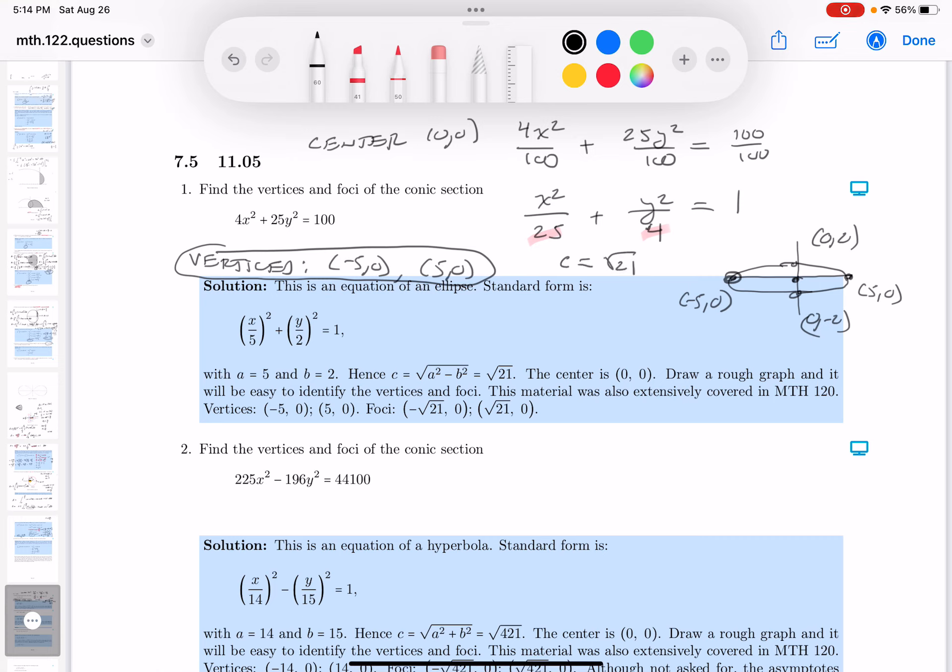So what are they going to be? They're going to be points that are in from the center. I put this over here, the foci. So what are they going to be? Well, let's take a look. It's going to be (-√21, 0). And the other one is going to be (√21, 0).